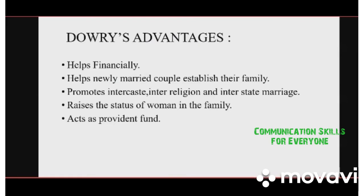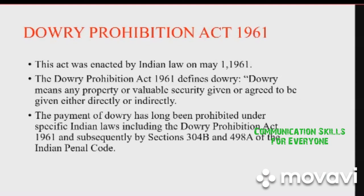Dowry Prohibition Act 1961: This act was enacted by Indian law on May 1st, 1961. The Dowry Act 1961 defines dowry as any property or valuable security given or agreed to be given, either directly or indirectly. The payment of dowry has long been prohibited under specific Indian law, including the Dowry Prohibition Act 1961 and subsequently by Section 304B and 498A of the Indian Penal Code. Section 304B states that if a bride dies within 7 years of her marriage, then action will be taken against the bridegroom's family.